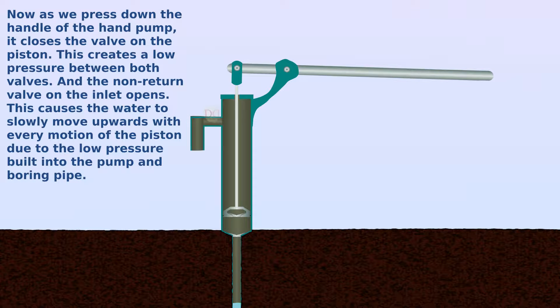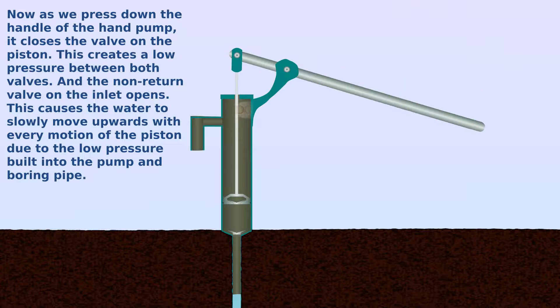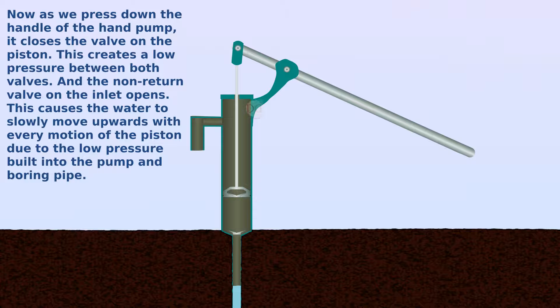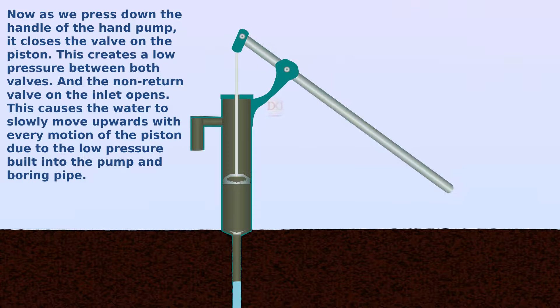Now as we press down the handle of the hand pump, it closes the valve on the piston. This creates a low pressure between both valves and the non-return valve on the inlet opens. This causes the water to slowly move upward with every motion of the piston due to the low pressure built inside the pump and boring pipe.